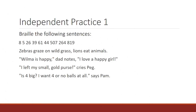For independent practice 1, braille the following sentences. The first sentence is a series of numbers: 8, 5, 26, 39, 61, 44, 507, 264, 819.